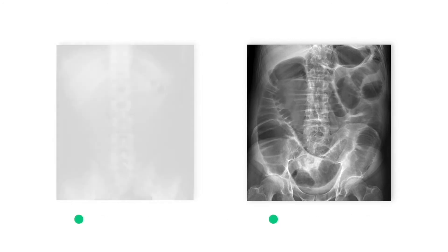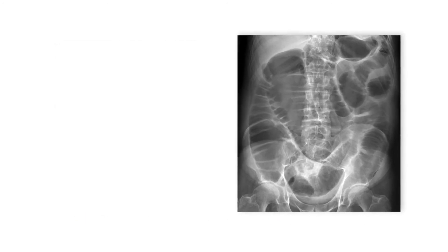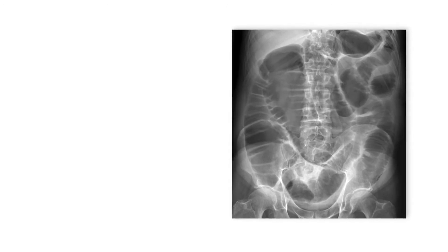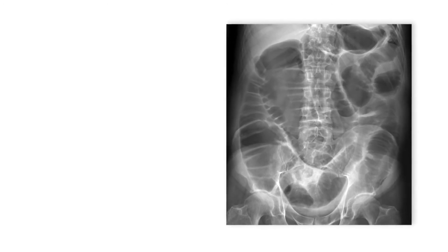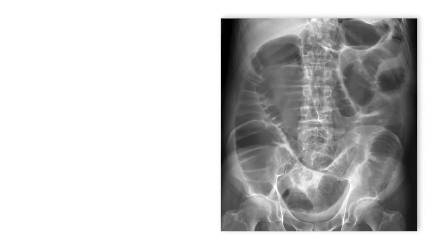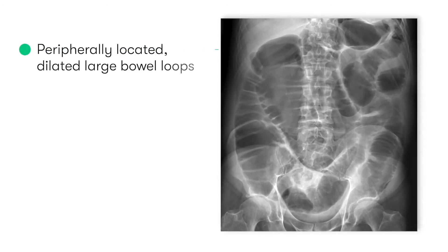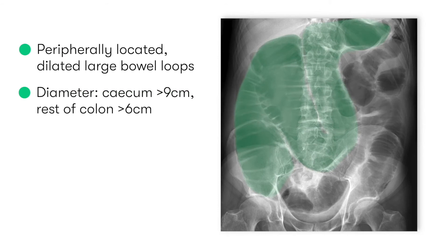Looking more closely, the features we'd normally expect to see on abdominal x-rays of large bowel obstruction are peripherally located dilated large bowel loops, with a diameter of more than nine centimetres for the cecum and more than six centimetres for the other parts of the large bowel.